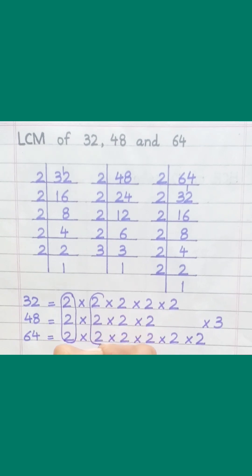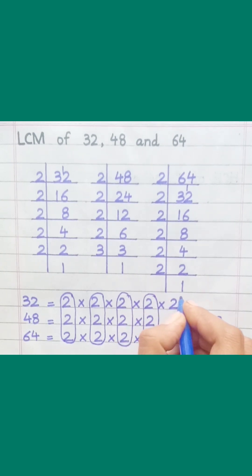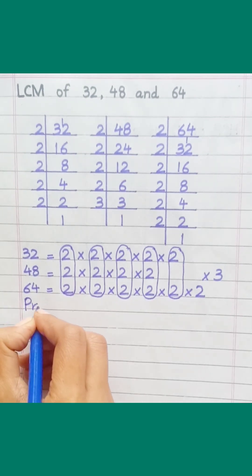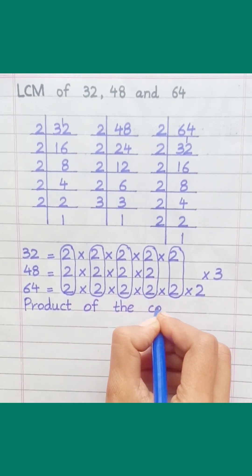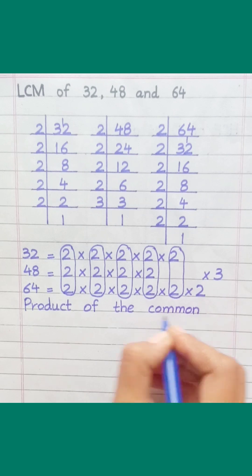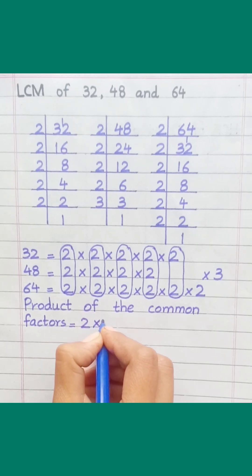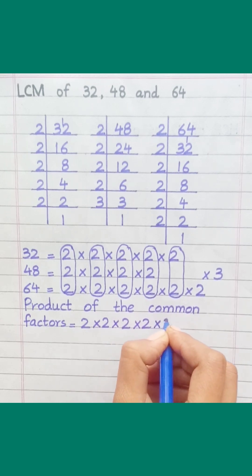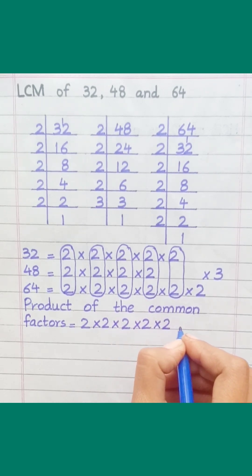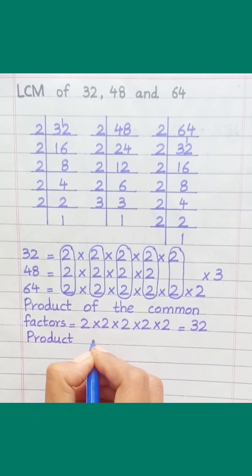Loop the factors that are common to all of the given numbers. Product of the common factors equals 2 x 2 x 2 x 2 x 2 x 2 equals 32.